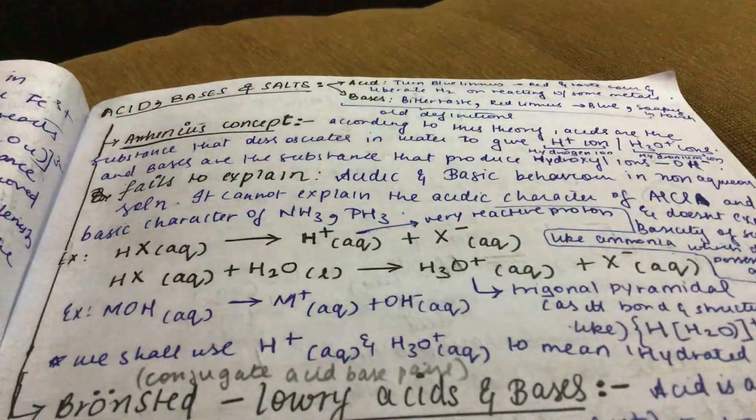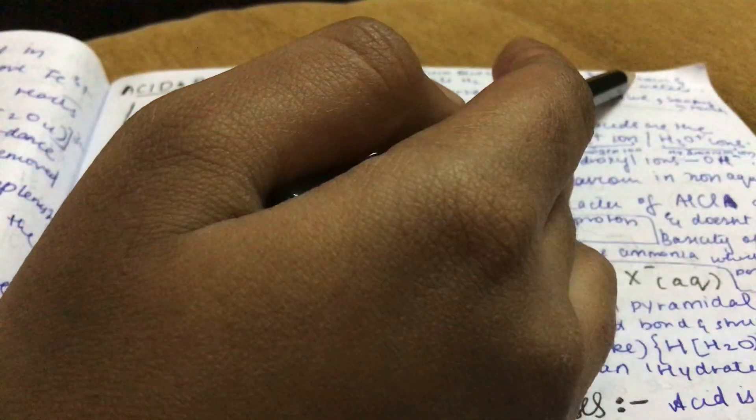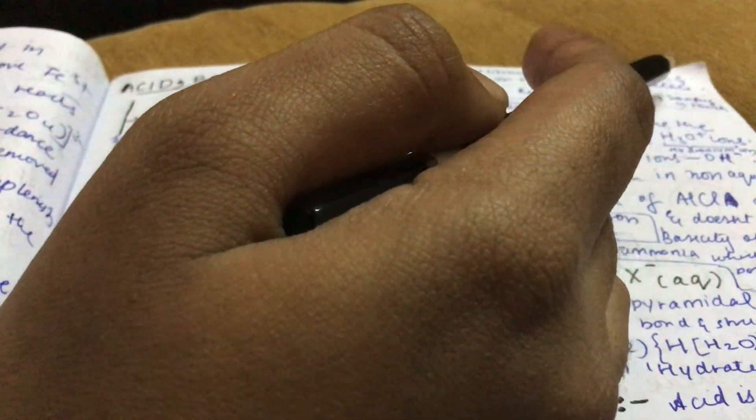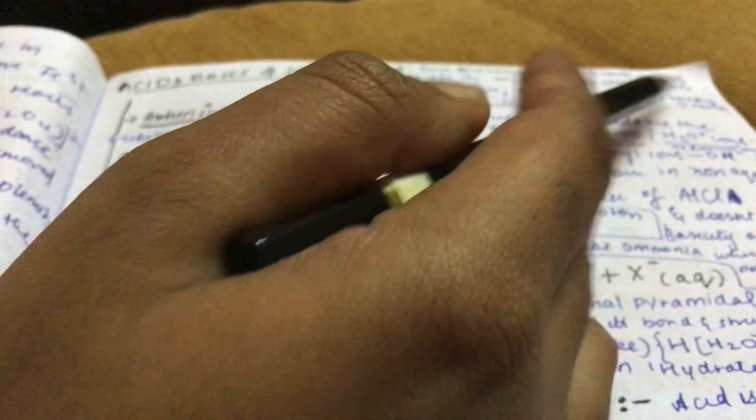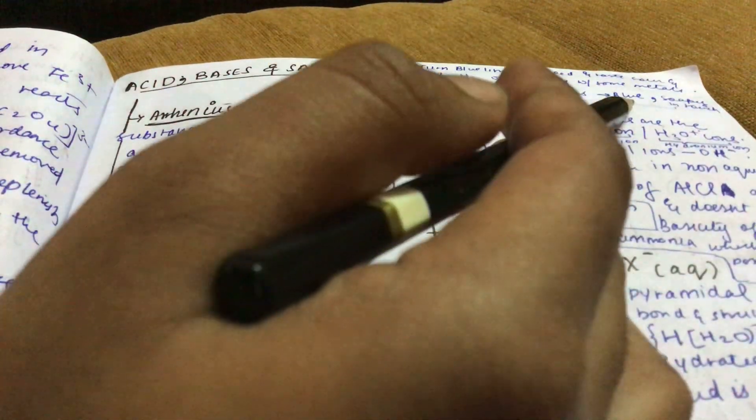Acids turn blue litmus to red, taste sour, and liberate H2 reacting with some metals. Bases are bitter to taste, turn red litmus to blue, soapy to touch. These are old definitions.